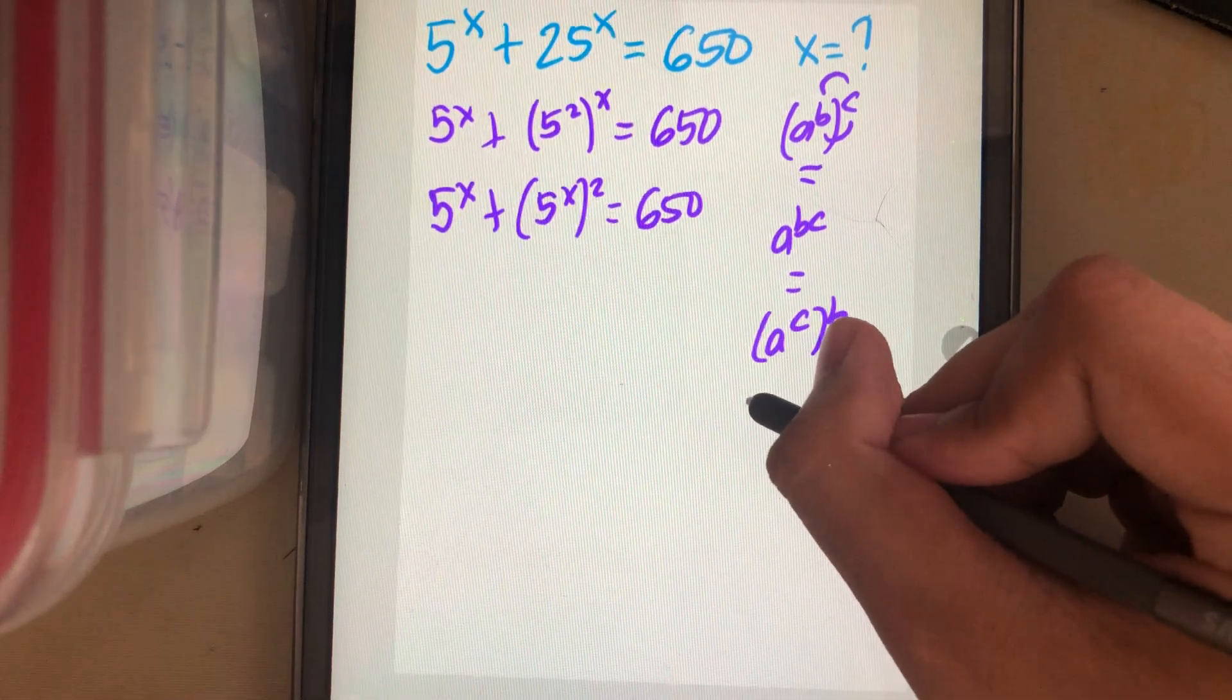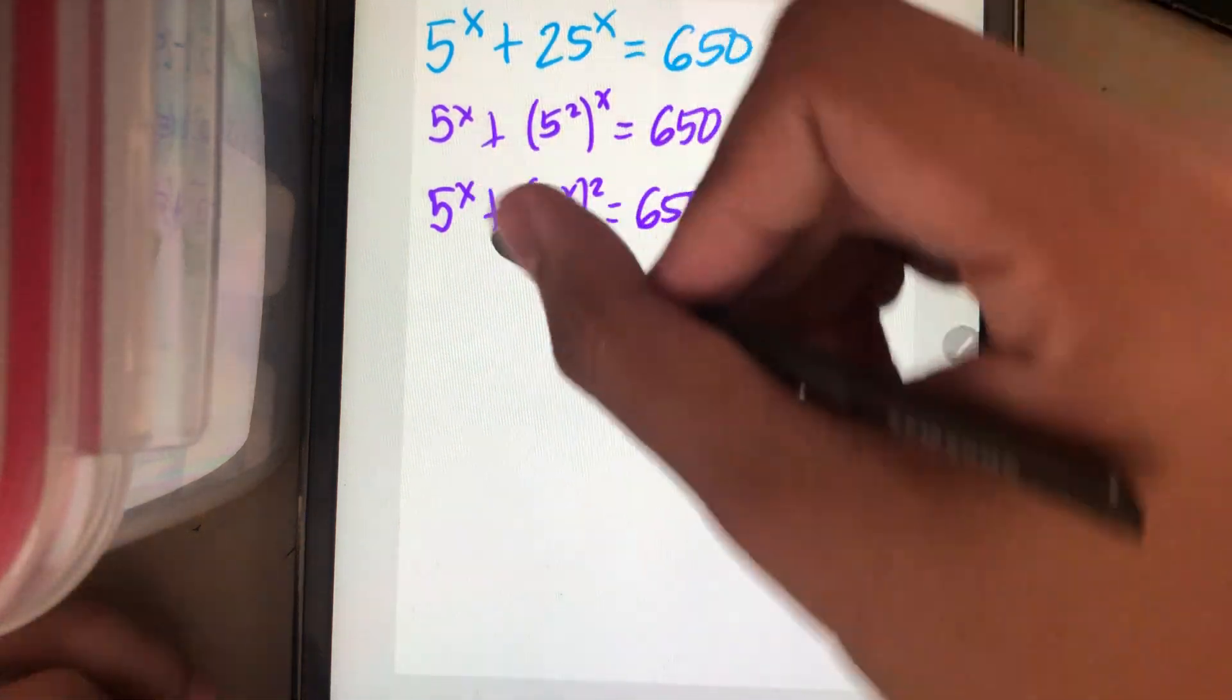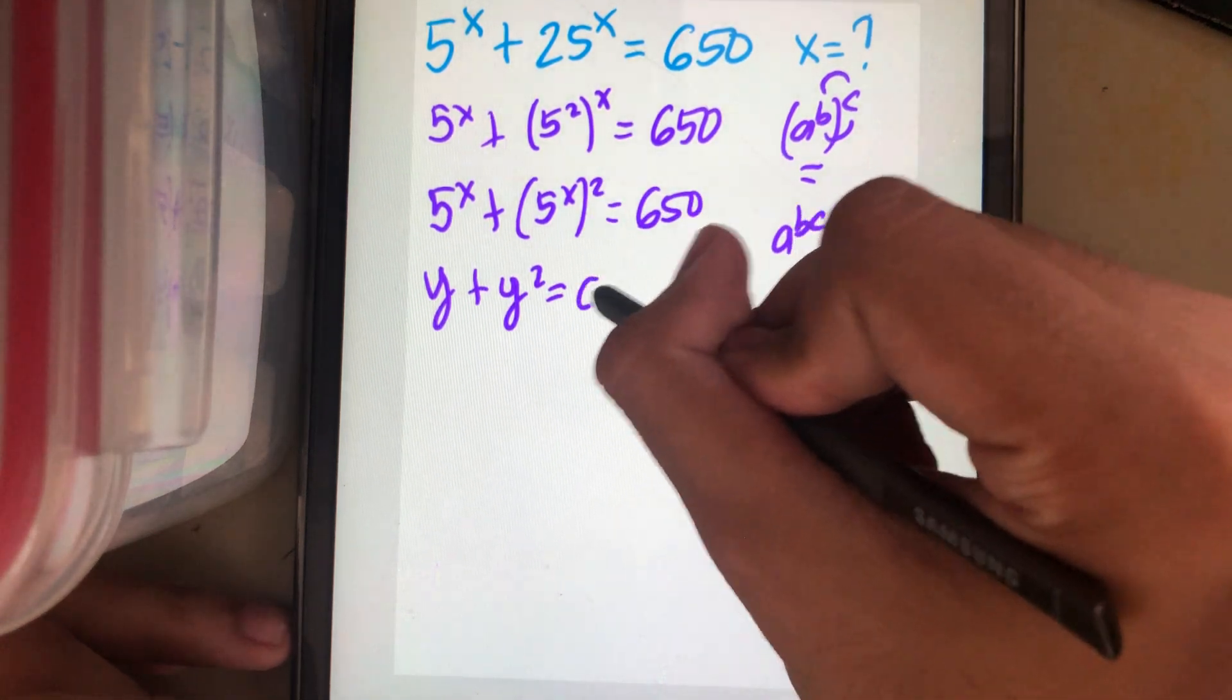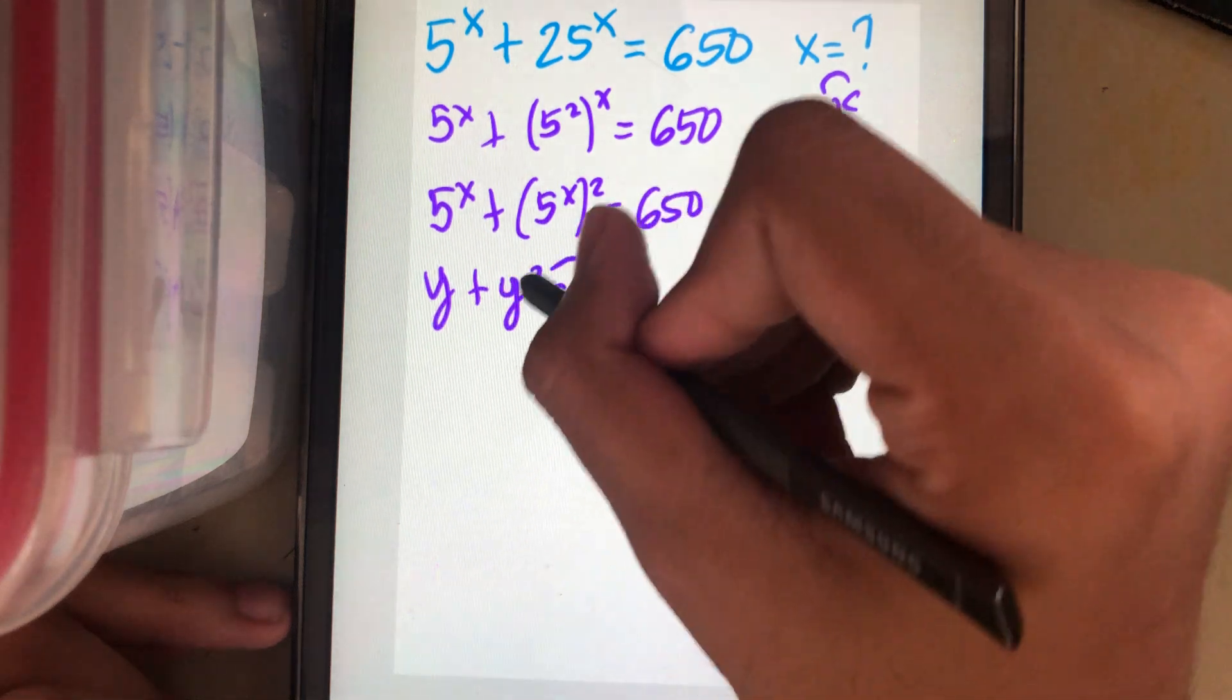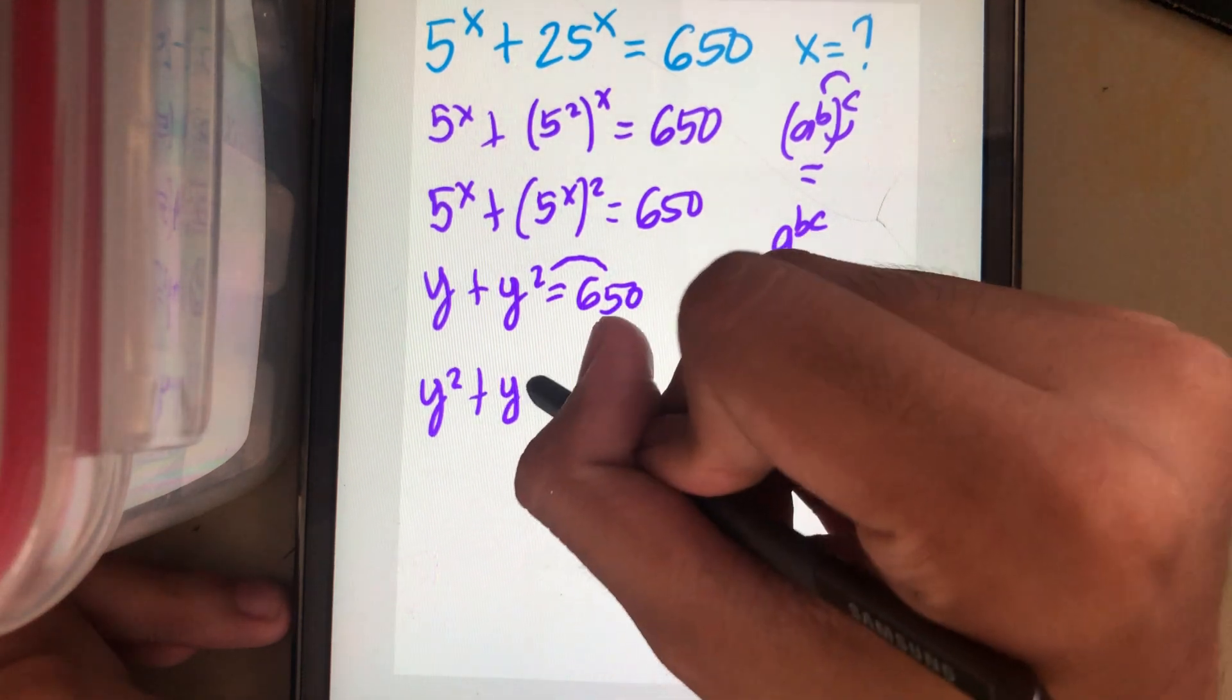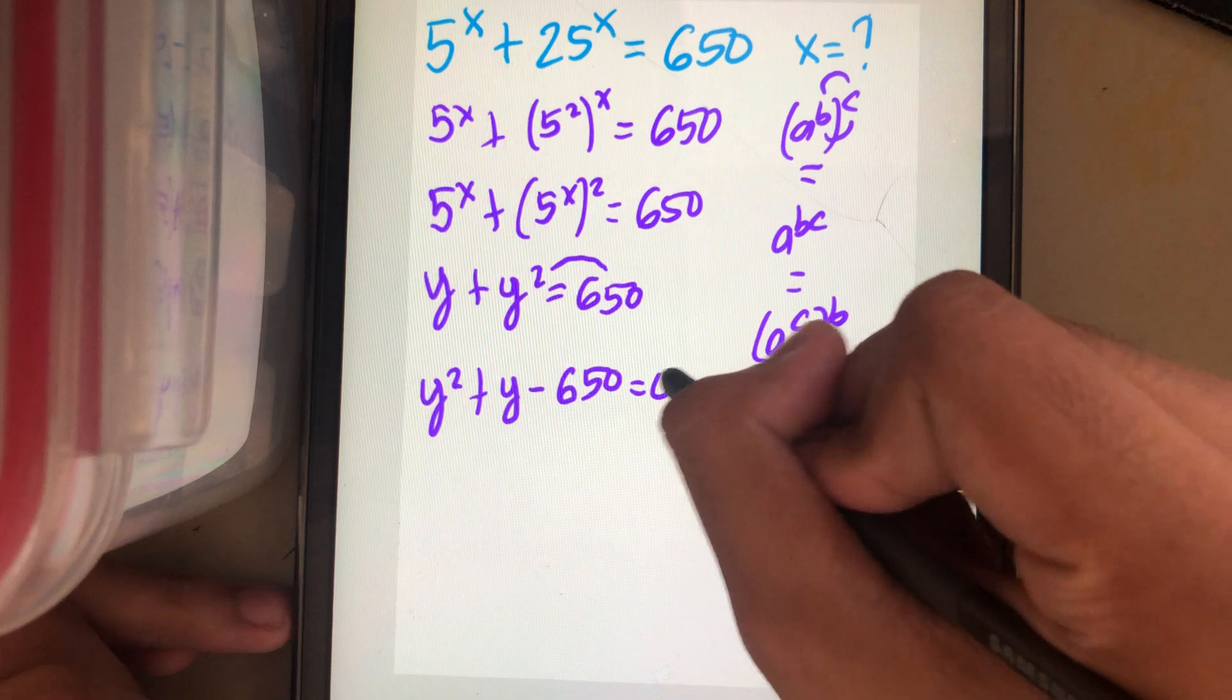We'll let 5 power x equal to y. So this becomes y plus y square is equal to 650. Move the 650 to the left and arrange the y square and the y. It becomes y square plus y minus 650 equal to 0.